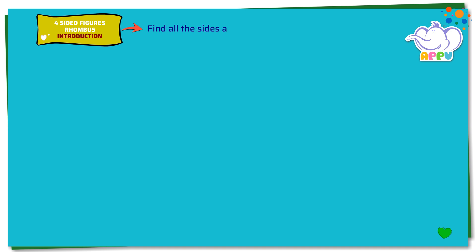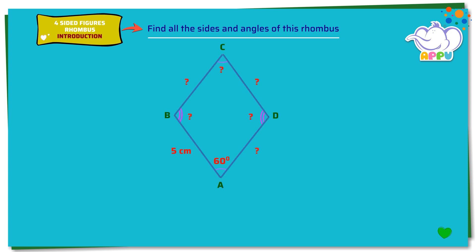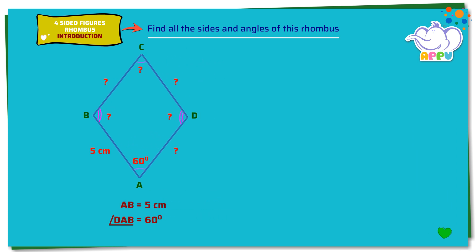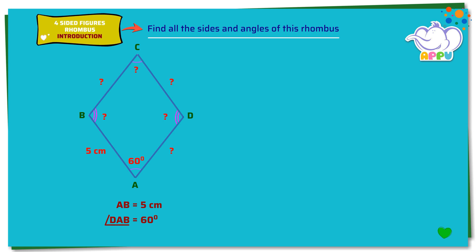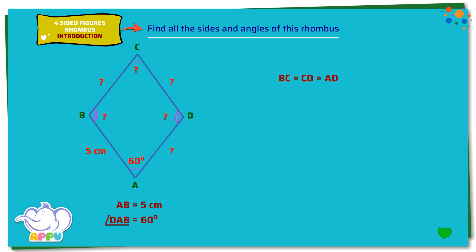Find all sides and angles of this rhombus. We need to find the sides BC, CD, and AD, and the angles ABC, BCD, and CDA. Let's find the sides BC, CD, and AD. We know that a rhombus has all sides equal, so length of BC equals length of CD equals length of AD equals length of AB, that is equal to 5 cm.